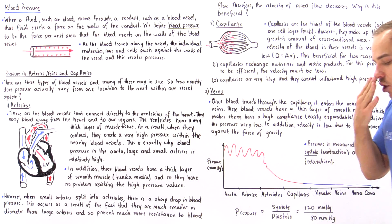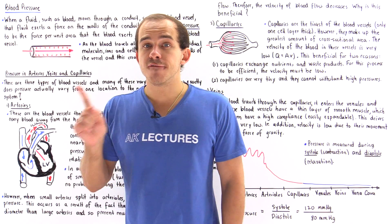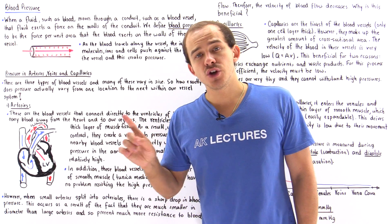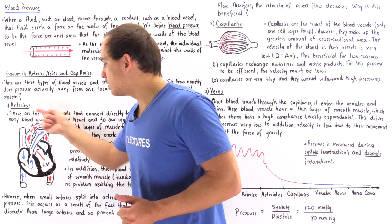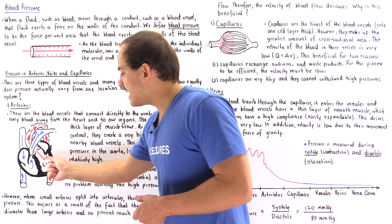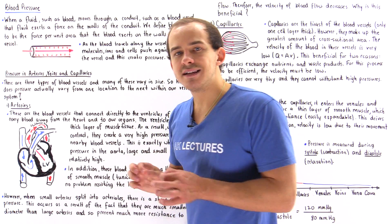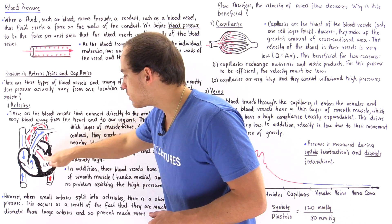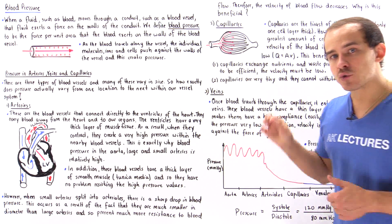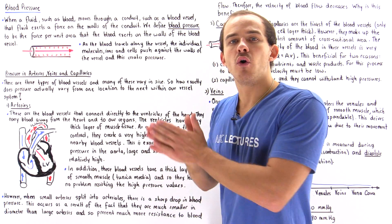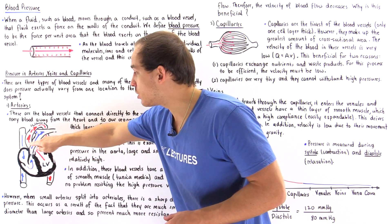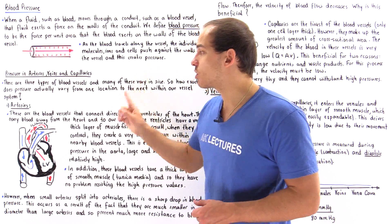Arteries are blood vessels that connect directly to the ventricle chamber of our heart, and these arteries always carry blood away from the ventricle of the heart to the organs, tissues, and cells of our body. Looking at the diagram, we have the heart and the surrounding blood vessels. Focusing on the left ventricle — it contains a very thick layer of muscle, shown in black. That thick muscle is what creates the hydrostatic pressure that forces blood into our blood vessels, and the blood vessel that connects directly to the left ventricle is the aorta, the largest artery in our body.